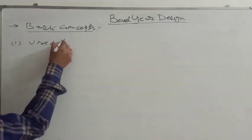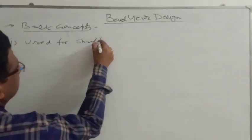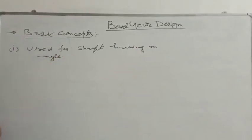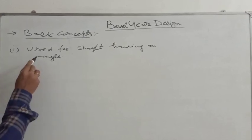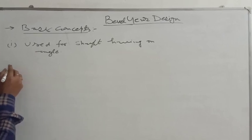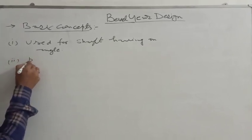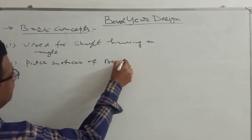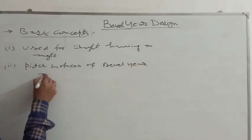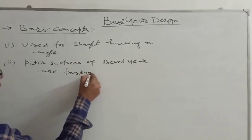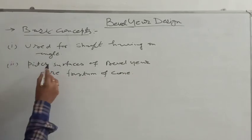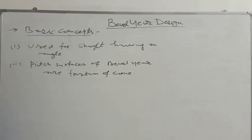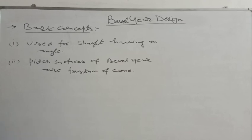Bevel gears are used for shafts having an angle. It means they can be used for transmitting power if the shafts are having an angle. The pitch surfaces of bevel gears are the frustum of a cone. Spur gears and helical gears are generated on a cylindrical surface.